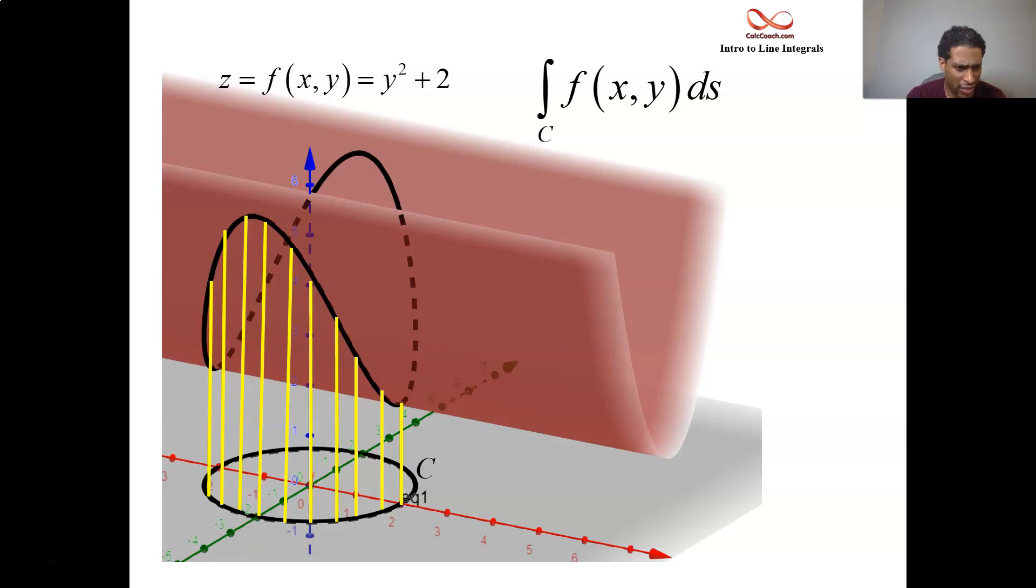We have to parameterize that curve. Let's say that curve has a radius of 2. So we talked about it in the previous video, let x equal 2 cosine t and y equal 2 sine t. Let t go from 0 to 2π. You have your parametrization.